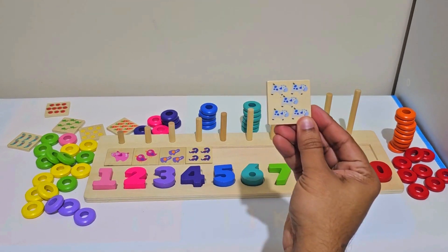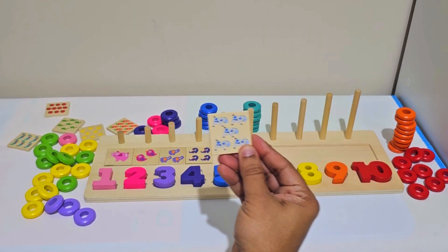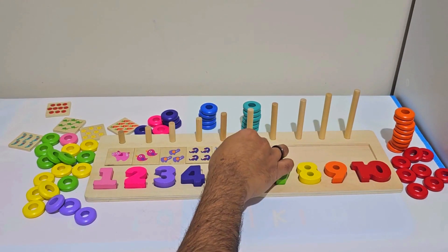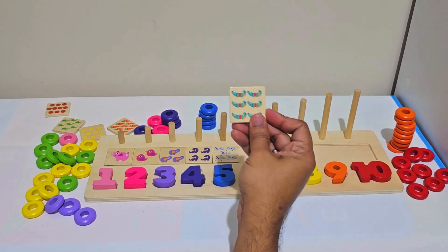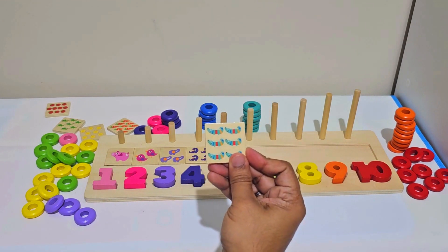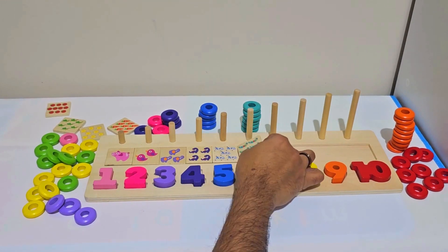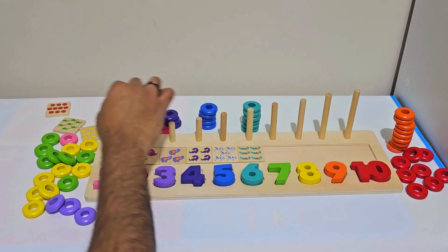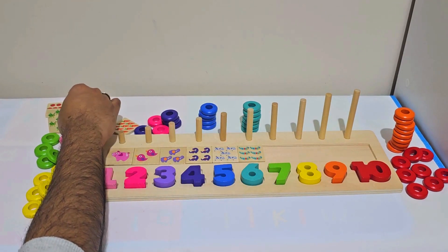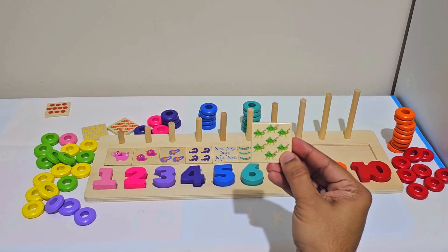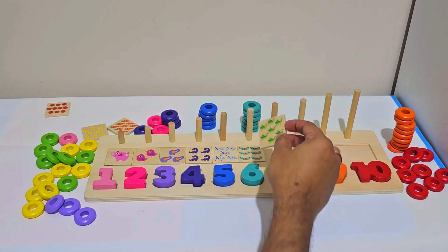For number 5, we have five blue horses. For number 6, we have six alligators. For number 7, we have seven grasshoppers.